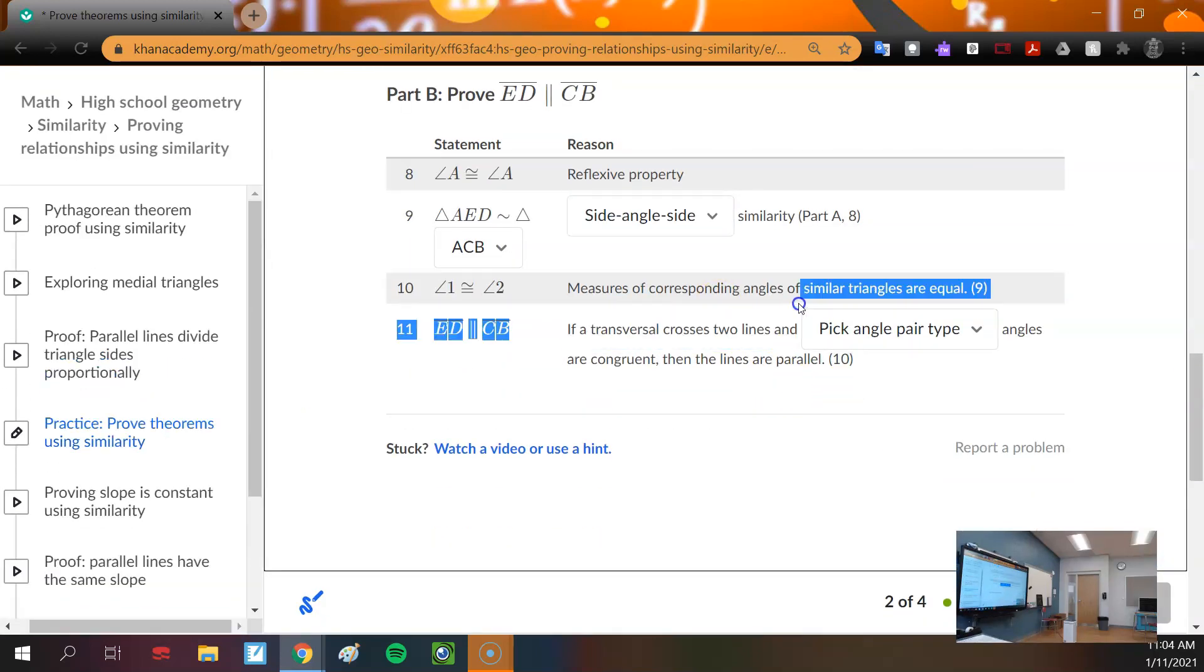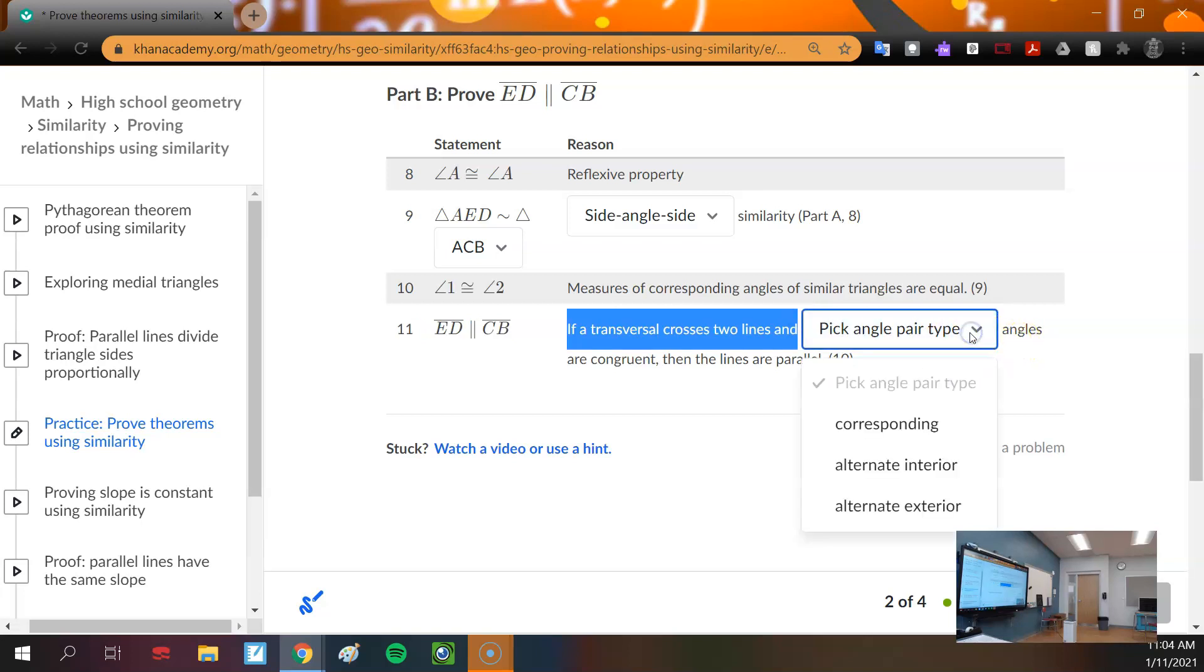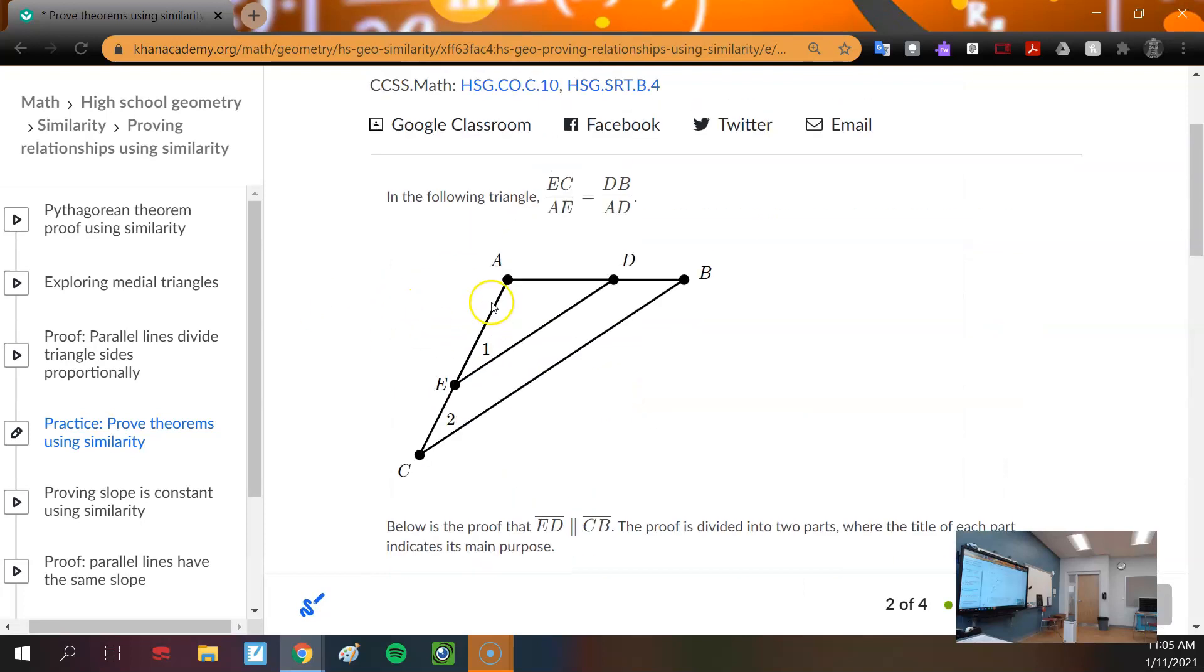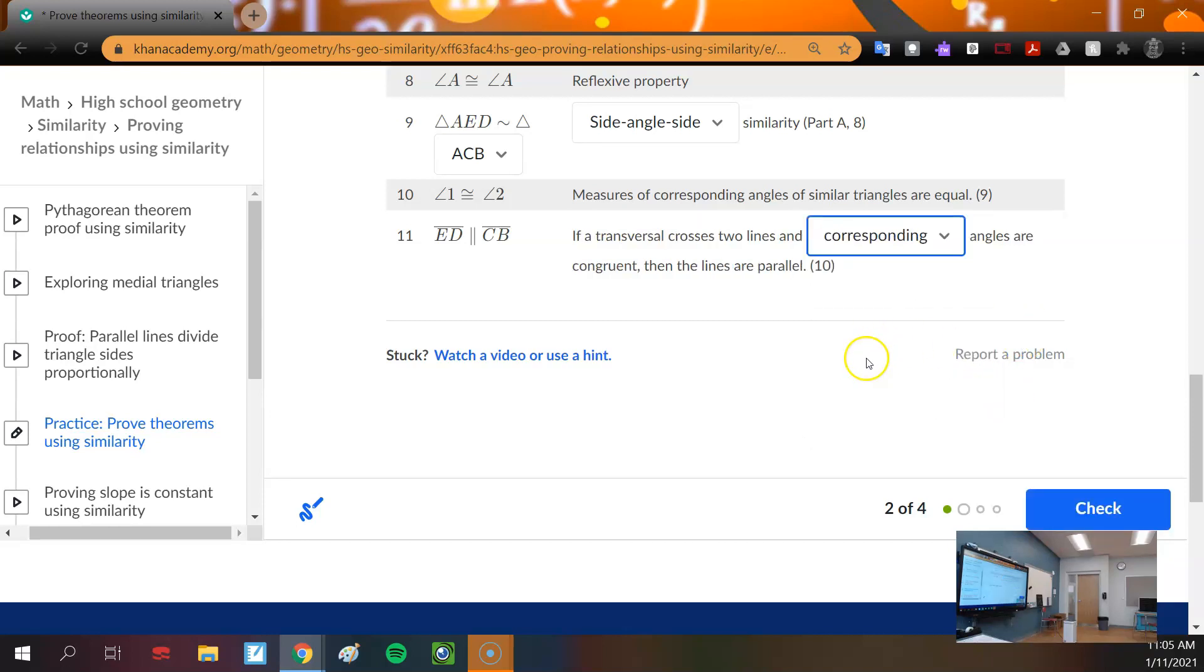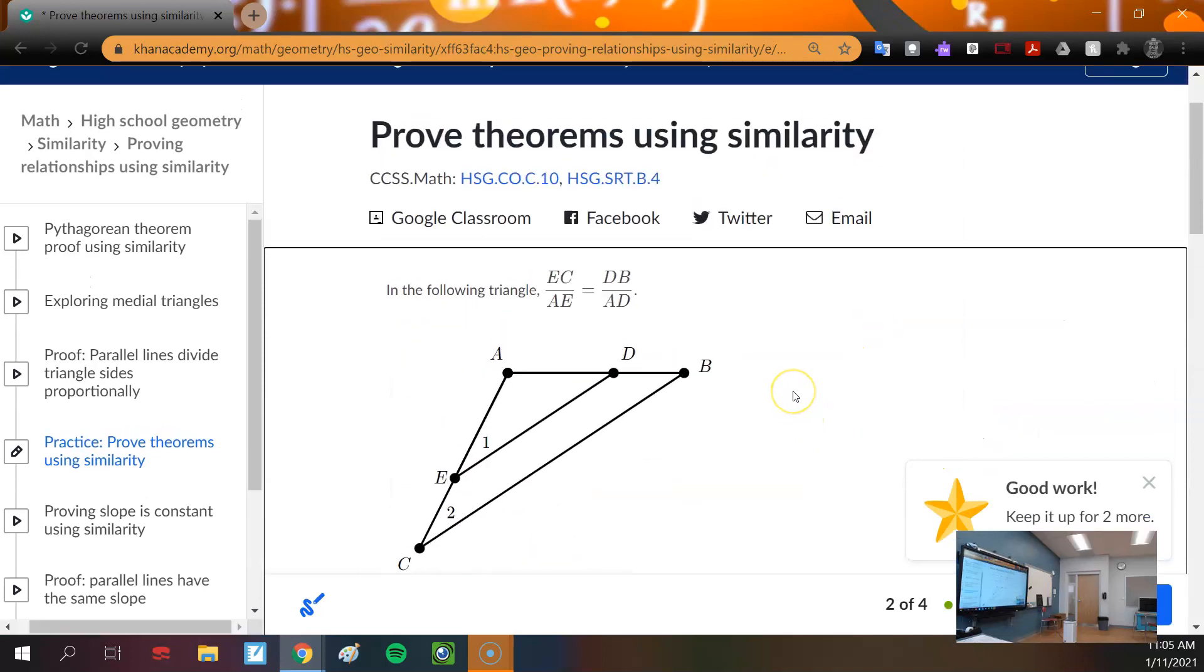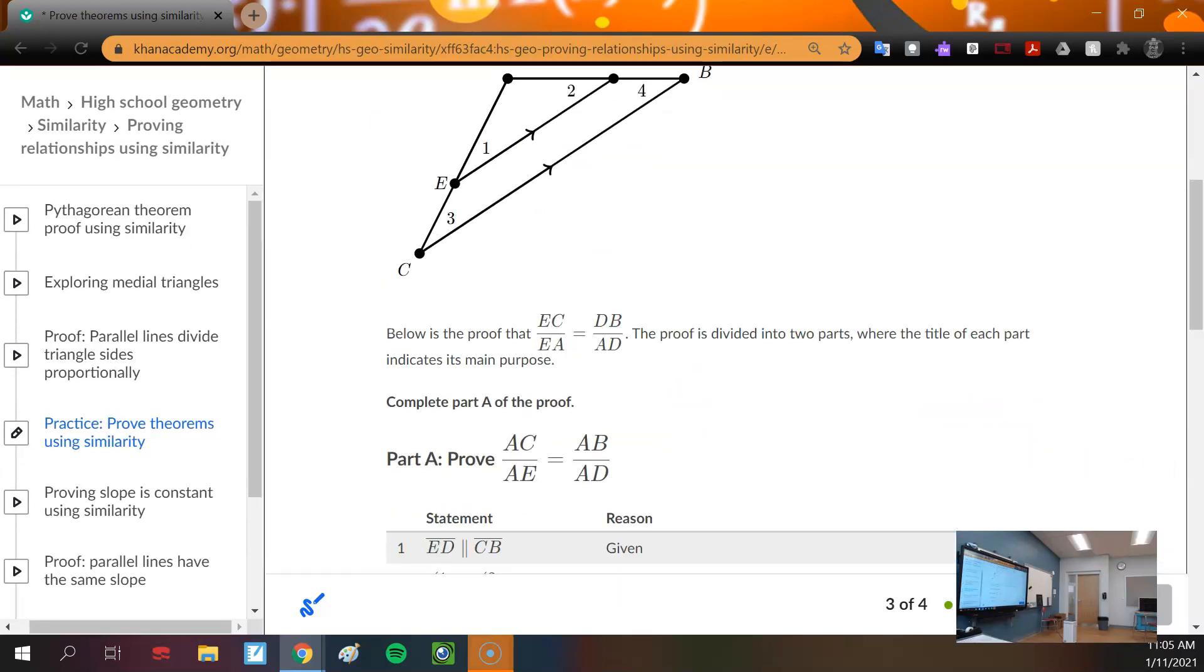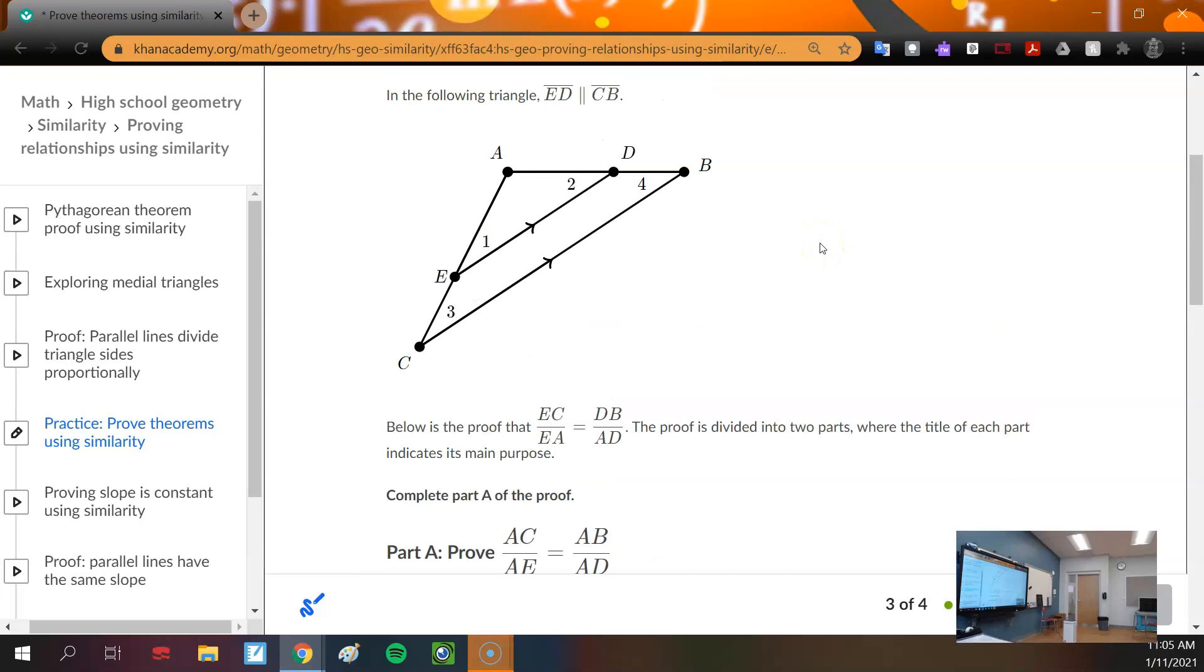And if a transversal crosses two lines, back to our parallel lines work, right? Parallel lines with a transversal. What would angles one and two be? Would they be corresponding? Would they be alternate interior, alternate exterior? Corresponding. They're in the same location, right? Both of them on the top and to the right. Why don't you guys try number three on your own and let me know if it's still not making sense? Don't hit check if you're not confident in the answers. I want you to try and figure it out.